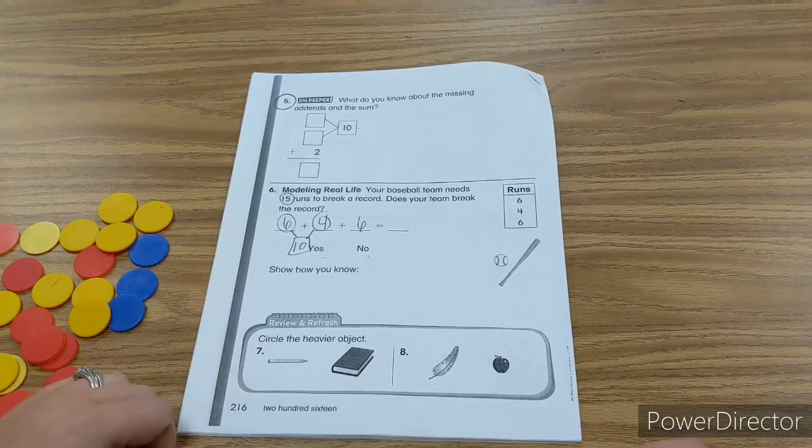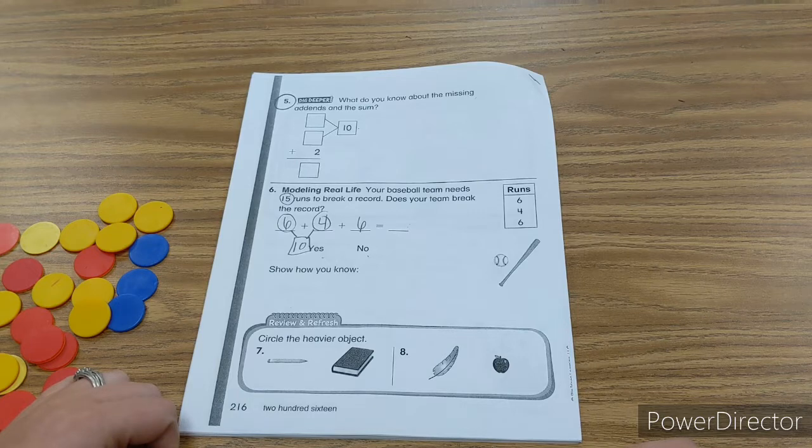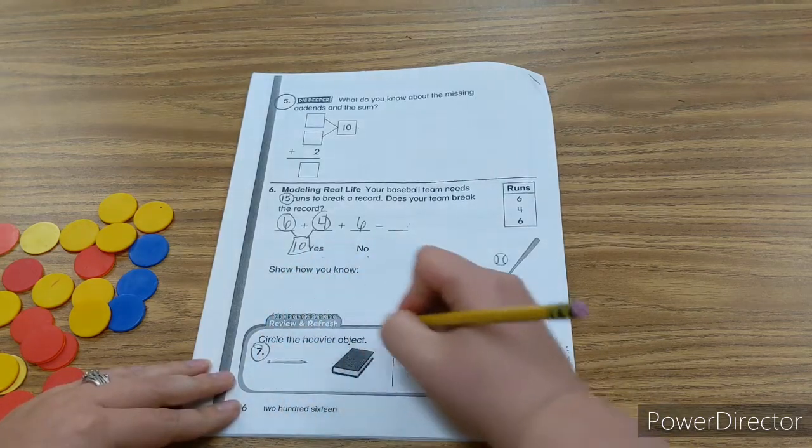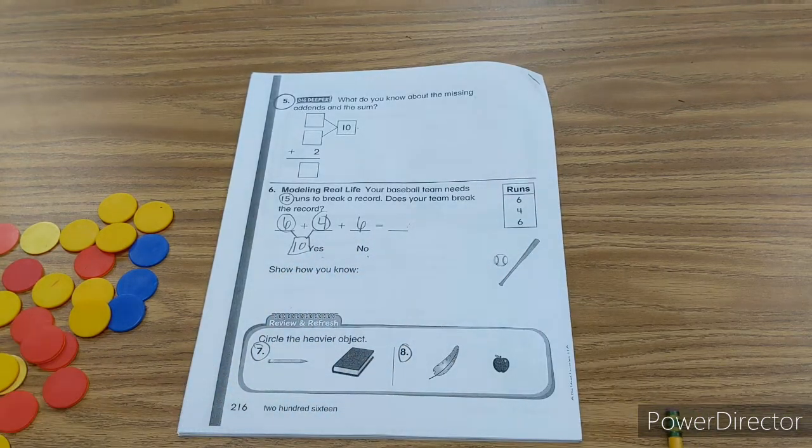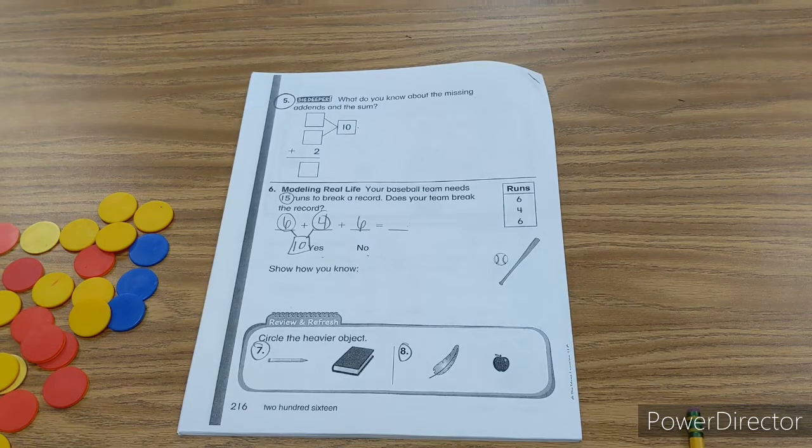And then on number 7 and 8, it wants you to circle the heavier object. So you can do 7 and 8 all on your own. Circle the heavier objects. I love you boys and girls.